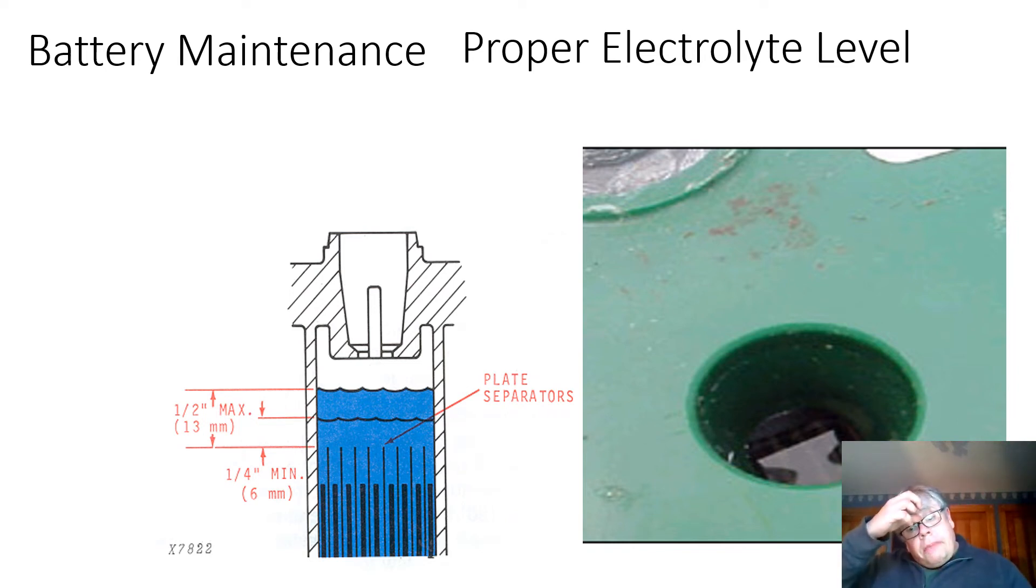Slide five, battery maintenance, proper electrolyte level. If it is a traditional battery you can check by removing the vent holes. Often they come out in a series of three, so three of them are three of the holes. You look in there and make sure that the electrolyte solution is a quarter inch to a half inch above the battery plates.